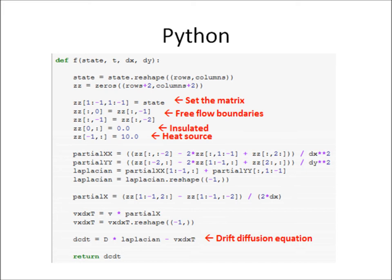For our example, the left and right sides of our matrix t equal the closest row, simulating a free-flowing fluid. The bottom is set to 10, which is our source of heat, and the top is set to zero, showing an insulated boundary.